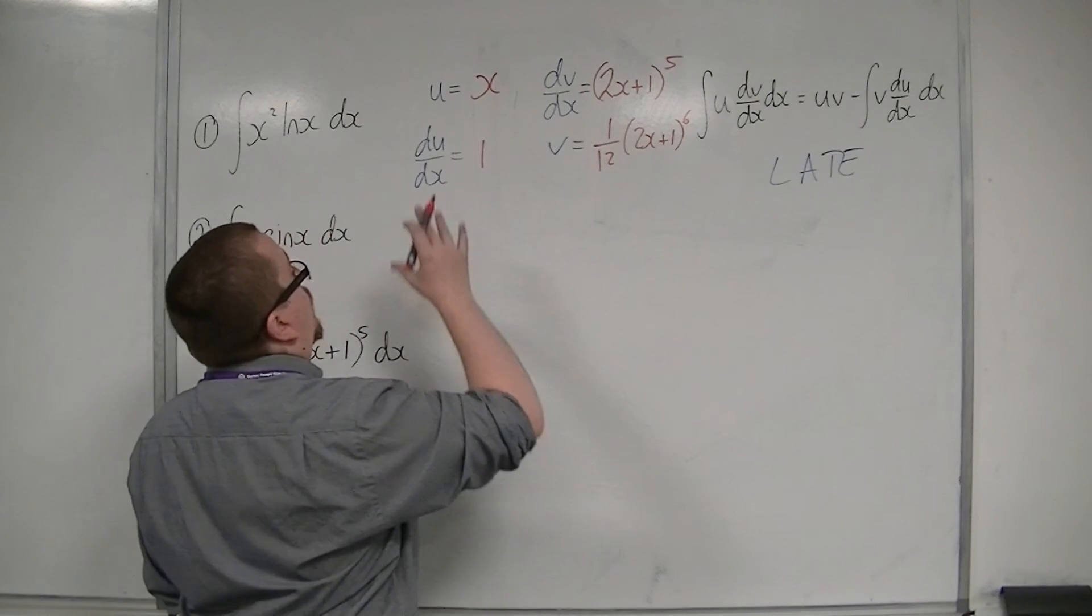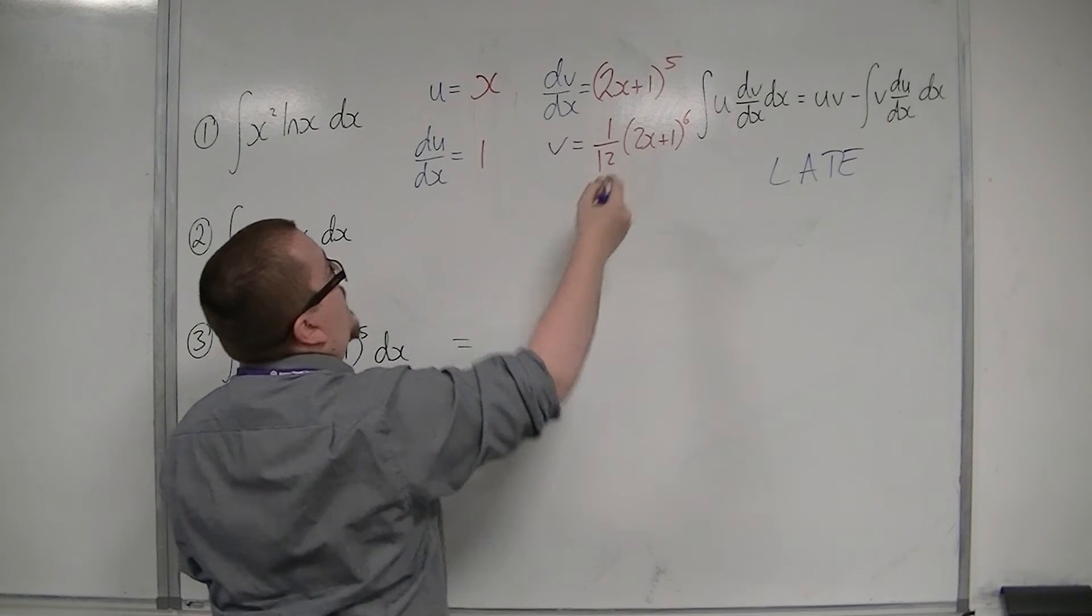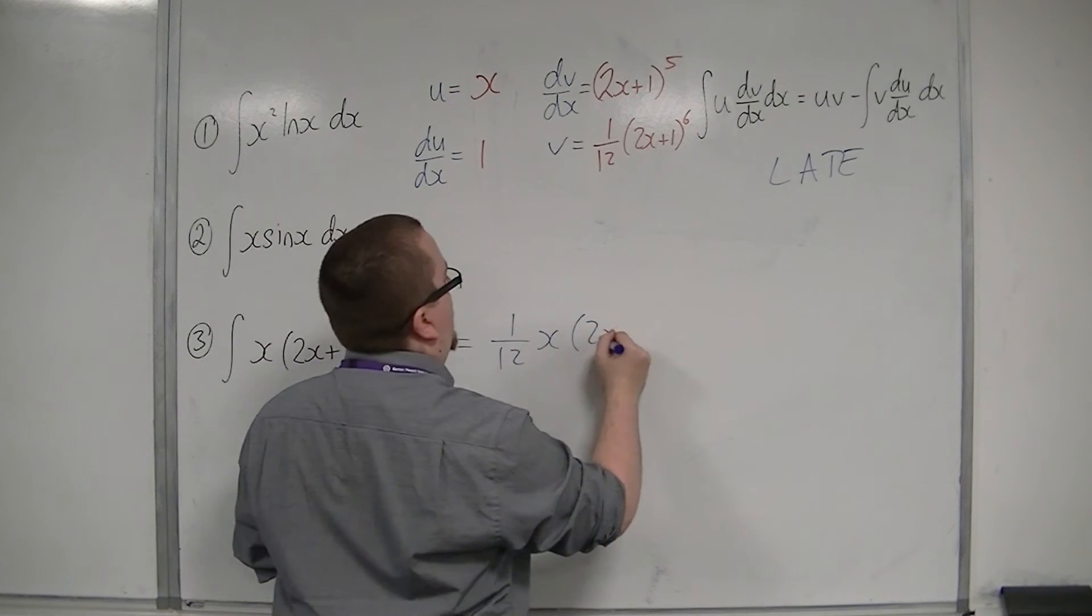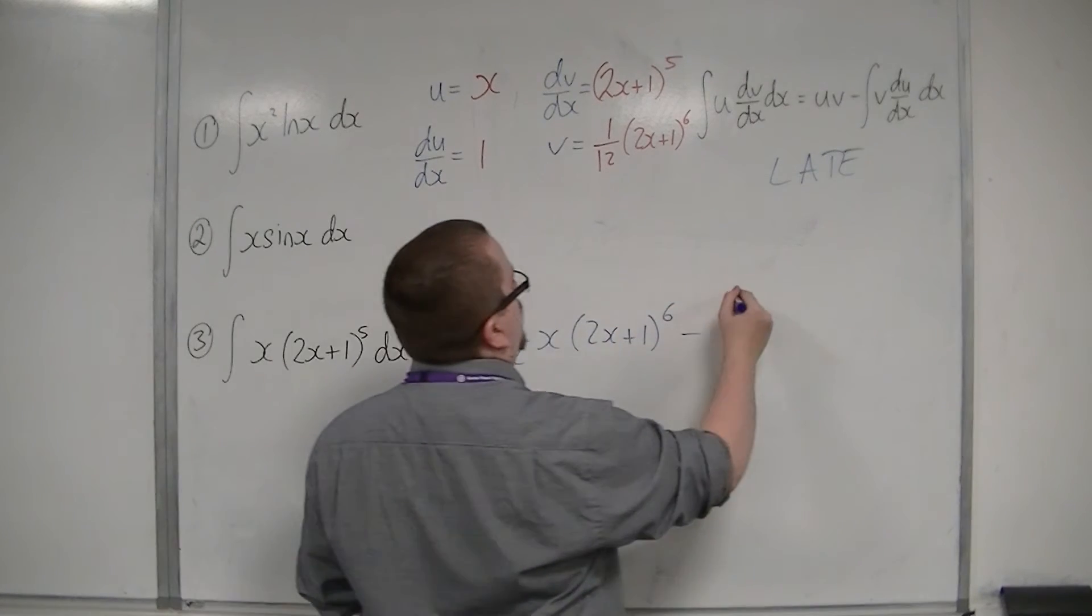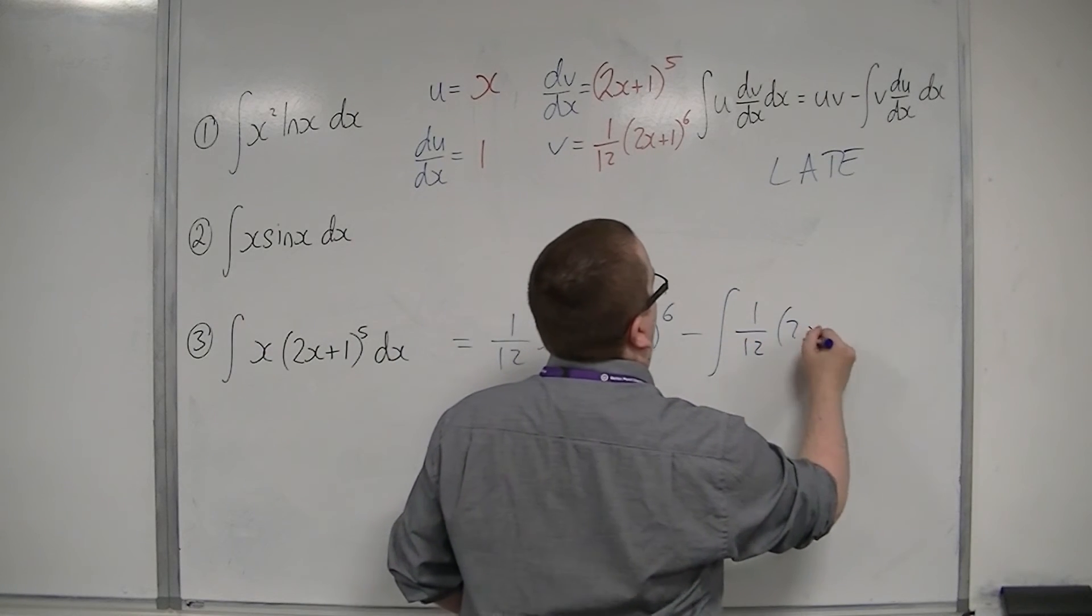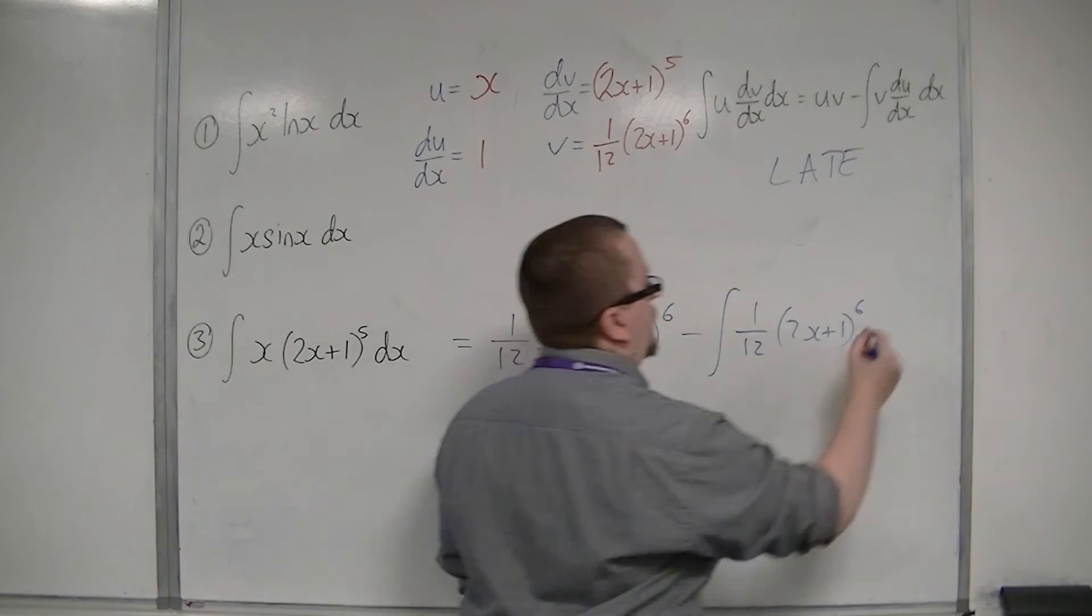So we would have, for the integral, u times v. So x times 1 twelfth, so 1 twelfth x, 2x plus 1 to the power of 6. Take away the integral of 1 twelfth, 2x plus 1 to the 6. So that's v times du by dx, dx.